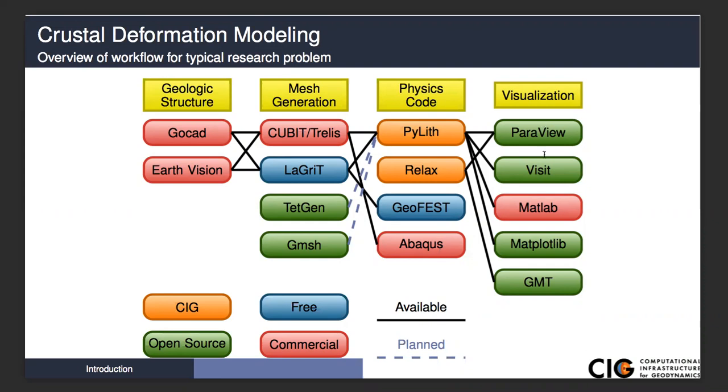For visualizations, there are all sorts of open source tools. We primarily use ParaView just because it has an easy learning curve and graphical user interface. Visit is also a tool that reads pretty much all the same formats that ParaView does. If you use MATLAB heavily, you can access PyLith output through HDF5 directly into MATLAB. If you're just getting started, I would suggest using Python instead of MATLAB. This gives you access to things like Matplotlib, which has basically all the functionality of MATLAB, and it's free and open source.